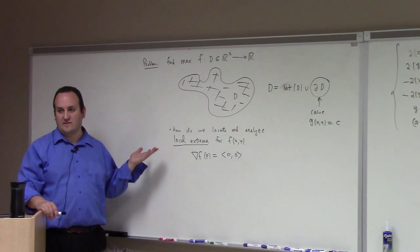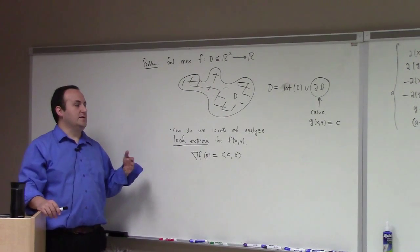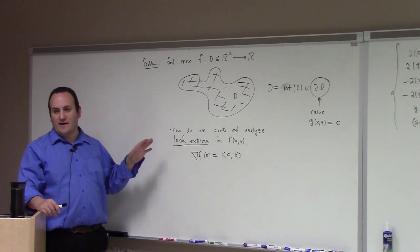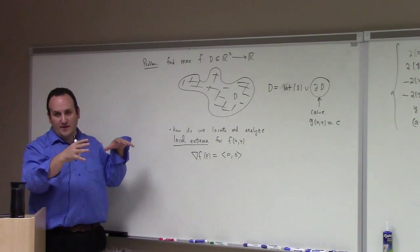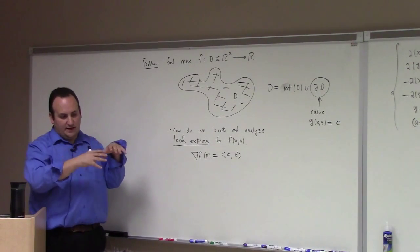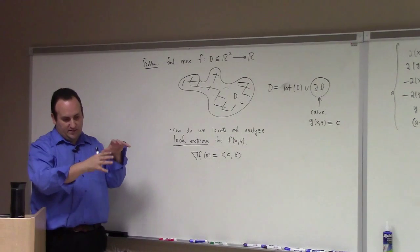That works just as well in higher dimensions. If I have a function of n variables, subject to some blob that's compact in n dimensions, that blob will have an interior and a boundary. The boundary will be a constraint manifold.